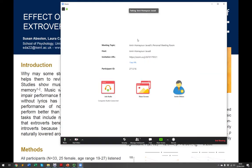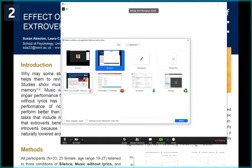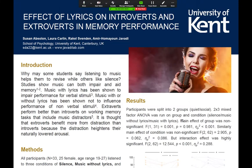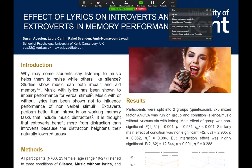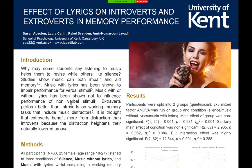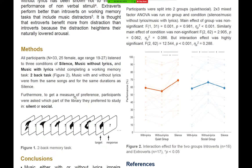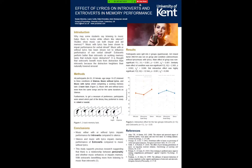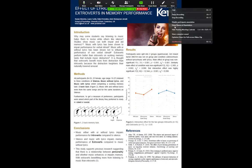To record the poster presentation, go to 'Share Screen', select the window you want to record, click 'Share', and again you'll see the ribbon on top. Go to 'More', click 'Record' — it is now recording — and you present your poster as you wish.